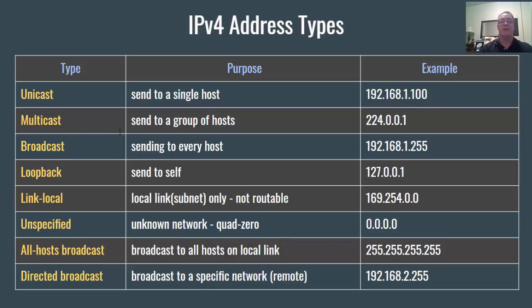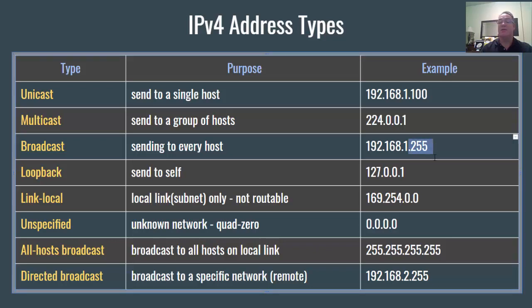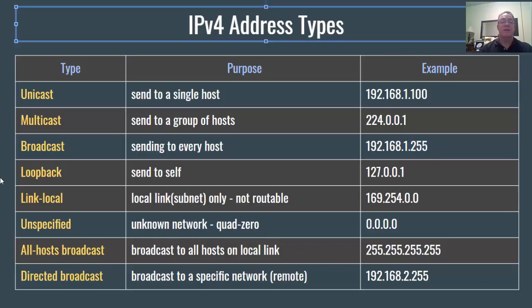A multicast is when you send to a group of hosts. It starts with 224, like 224.0.0.1. A broadcast address is when you send to every host. An example would be 192.168.1.255 — it's the last address in the network.